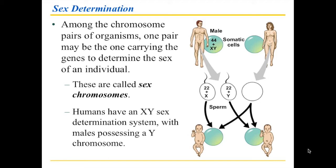In contrast, females are XX, and females have only an X chromosome to contribute. So any eggs a female makes are only X chromosome eggs. Which means that in this situation, because the male has two different chromosomes, the male determines the sex of the offspring. Females need the X sperm, and male offspring require the Y sperm.